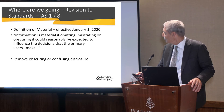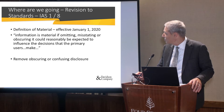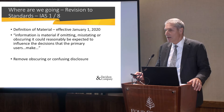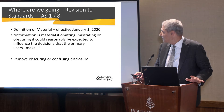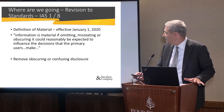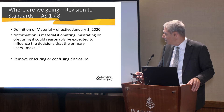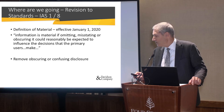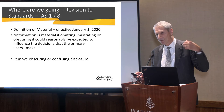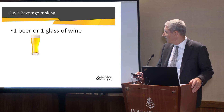The other revision is IAS 1: the definition of material will now be applied to financial statement disclosure starting in 2020. Information is material if omitting, misstating, or obscuring it could reasonably be expected to influence the decision makers. Materiality is usually an auditor's term — now it becomes a financial statement disclosure term. What it really means is: remove obscure and confusing disclosures. Pull out that old stuff that just doesn't matter anymore, because readers do not care about it. Beverage ranking: one beer, one glass of wine.